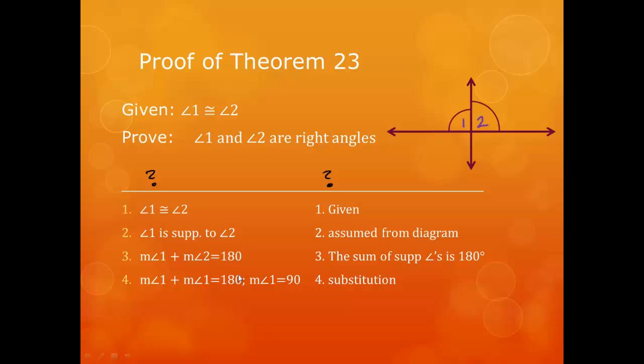Therefore, the measure of angle 1 equals 90, by substitution. And we can cap it off with angle 1 and angle 2 are right angles, because congruent angles have the same measure.